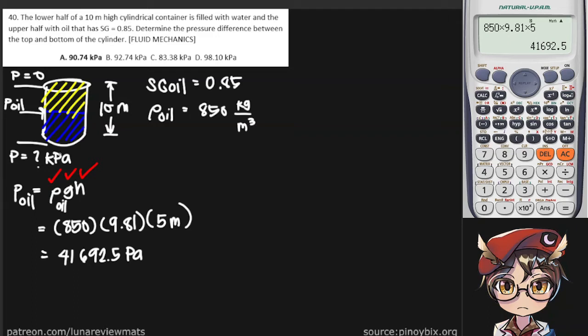Now we can do the same to the water because we know the density of water to be 1000 kilograms per cubic meter. Same thing here, just different densities.